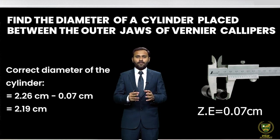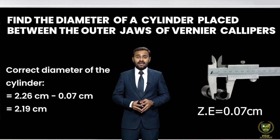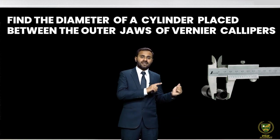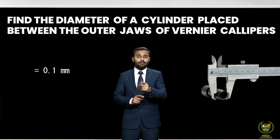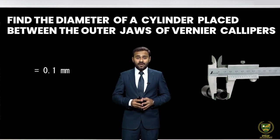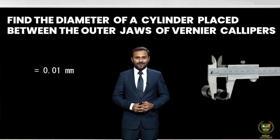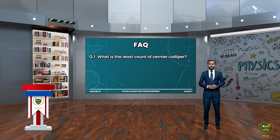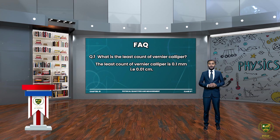Now let's have a small quiz. What is the least count of Vernier Caliper? The least count of Vernier Caliper is 0.1 millimeter, which is equal to 0.01 centimeter. For a digital Vernier Caliper, the least count is 0.01 millimeter.